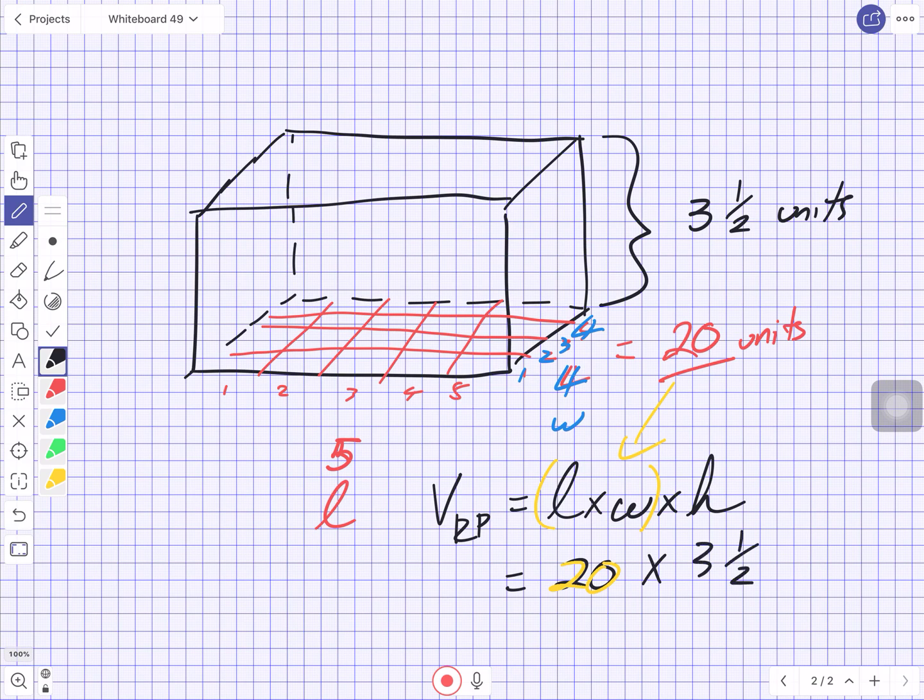I don't have a calculator, so let me break this down. 20 has to be multiplied by 3, and it has to be multiplied by 0.5. Three times 20 gives us 60 units. But here's another thing: a half times 20—what is half of 20? Half of 20 is 10. So when I add these together: 60 plus 10 equals 70. We actually get 70 units cubed.